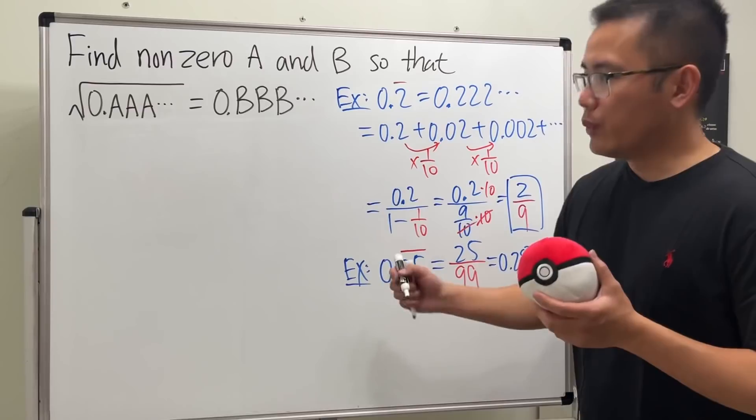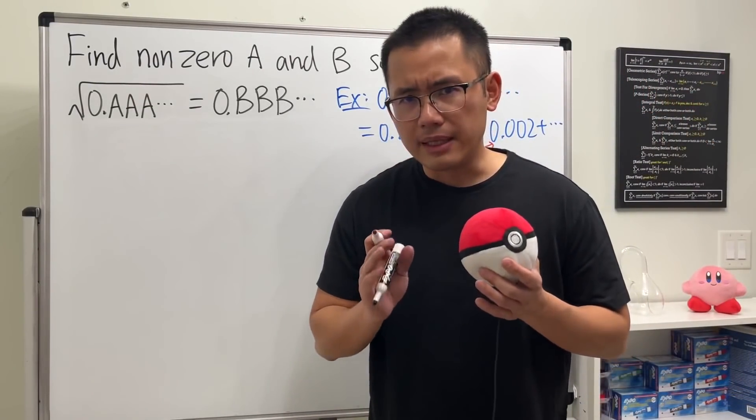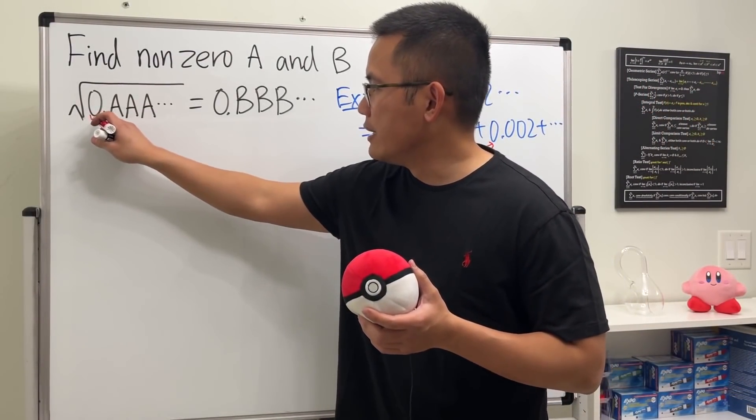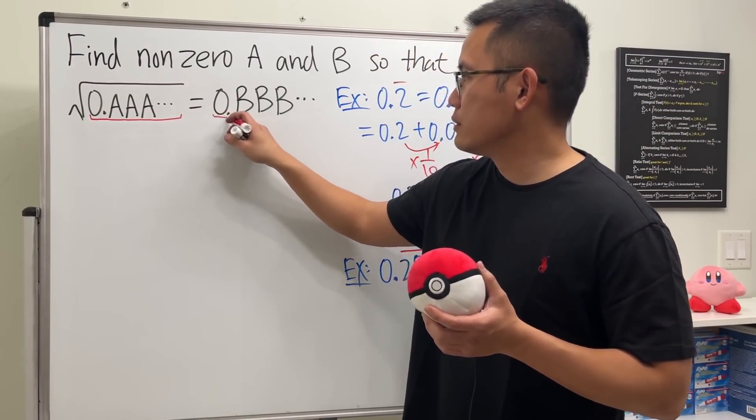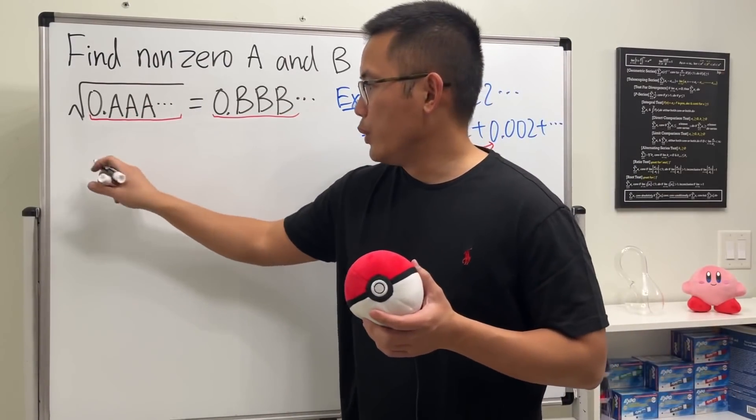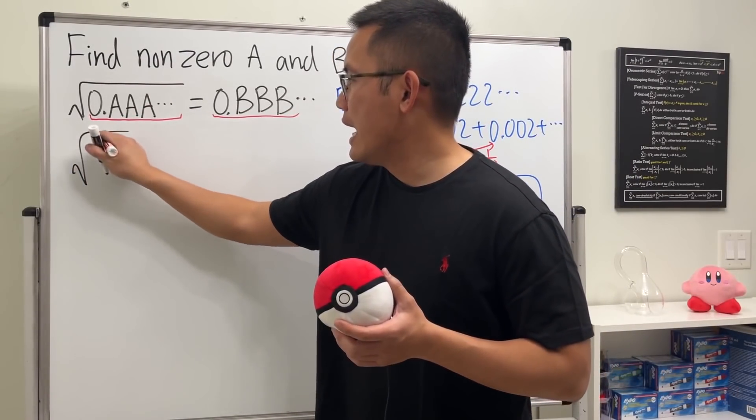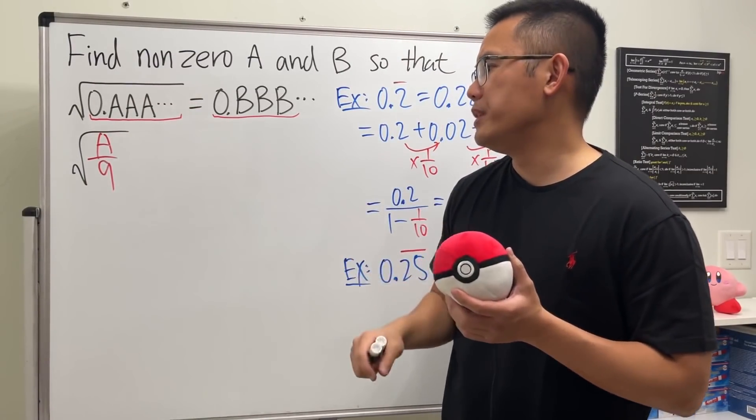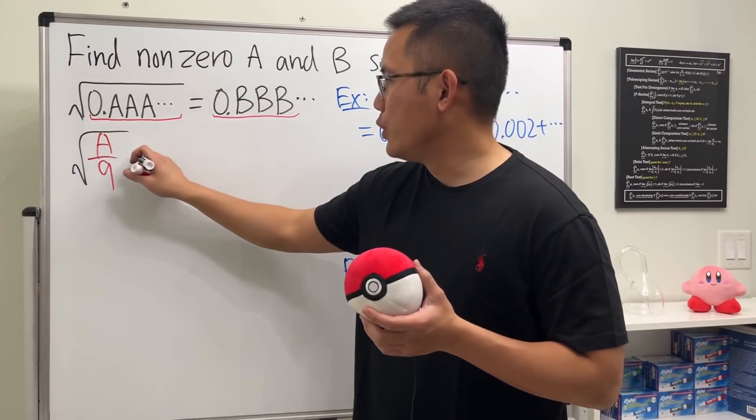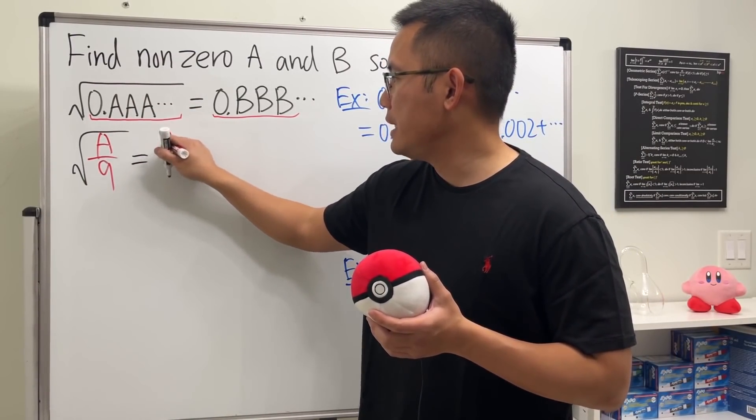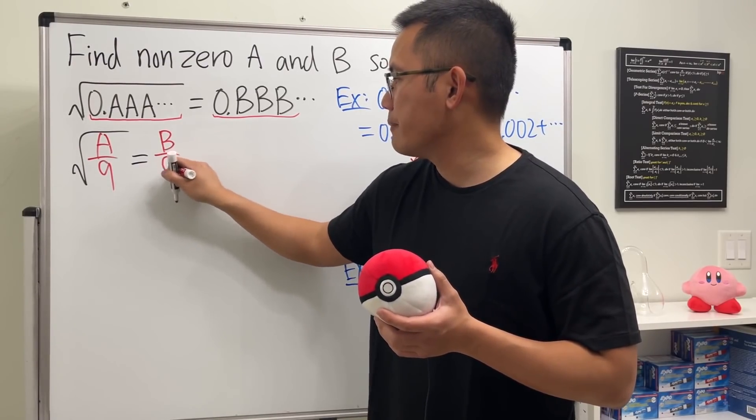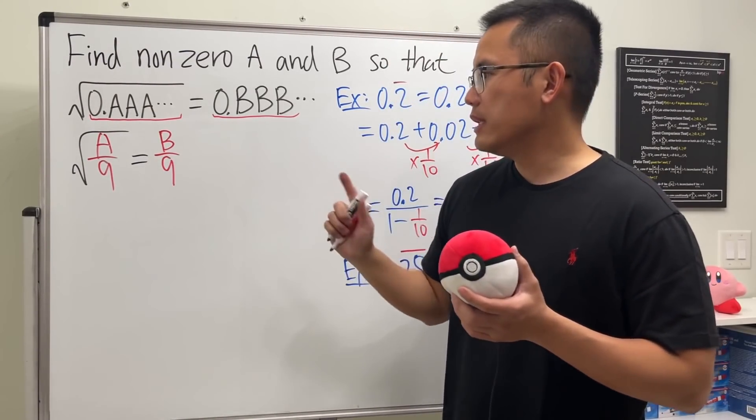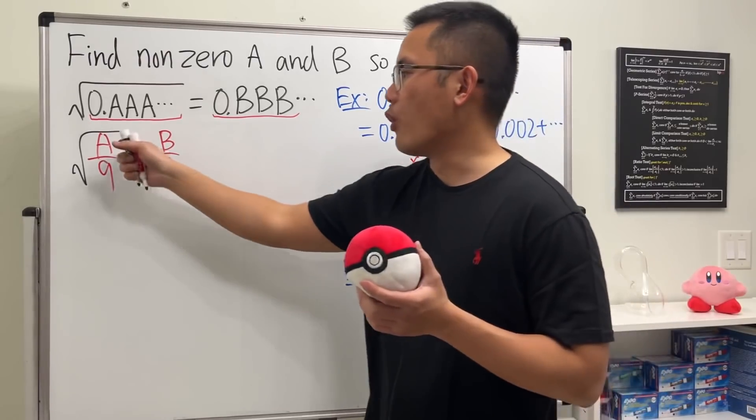Now back to this—how can we make this happen? The key is we're going to rewrite this in terms of fractions. For the first one, we get the square root of A/9, and we want this equal to B/9.